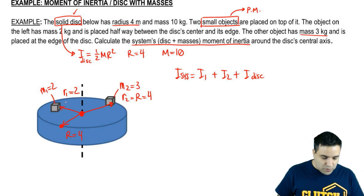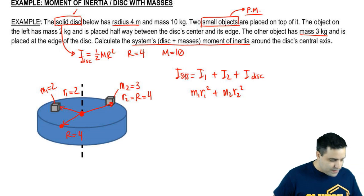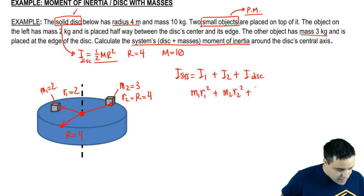Well, 1 and 2 are point masses. We talked about this here. So I'm going to write M1R1 squared plus M2R2 squared. And the disk is a shape, and it has moment of inertia given by half MR squared. Half big M, big R squared.